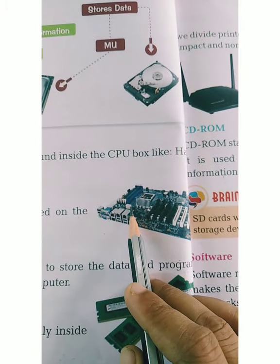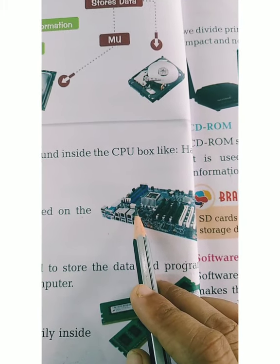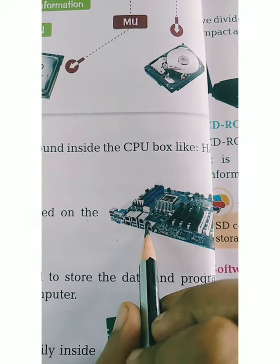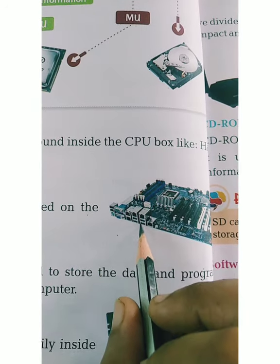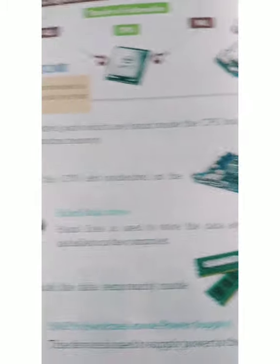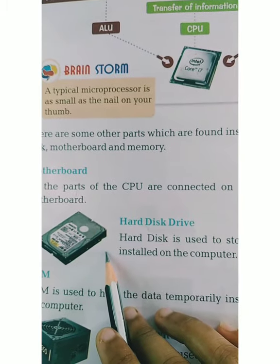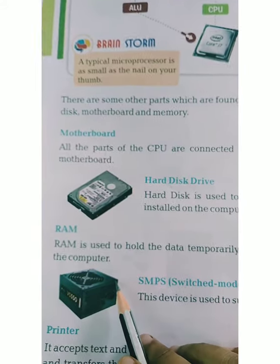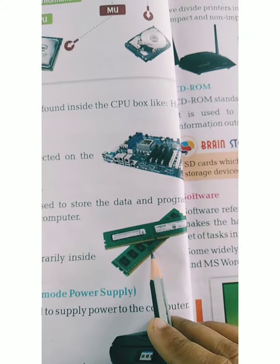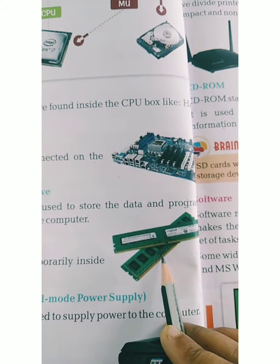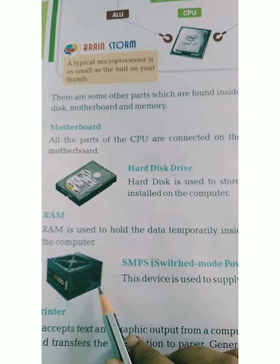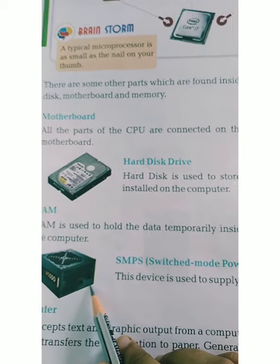Some parts are stored inside the hardware which we don't see in front of the CPU but are inside it. Like your motherboard — all the connectivity and wiring in the CPU is done through the motherboard. RAM stores internal data temporarily. If you switch off the computer, that data is deleted. SMPS stands for Switched Mode Power Supply.